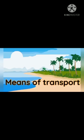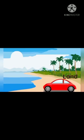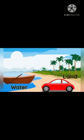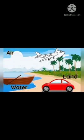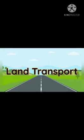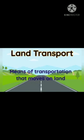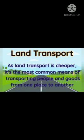There are mainly three means of transport: land transport, water transport, and air transport. Land transport is the means of transportation that moves on land. As land transport is cheaper, it is the most common means of transporting people and goods to different places.